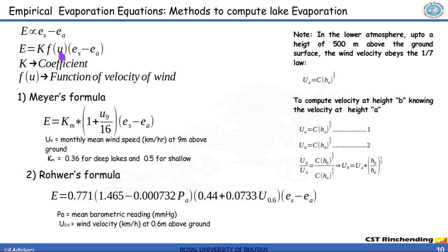As you notice in Mayer's formula, Km is the coefficient. The next term is the factor that considers the wind velocity and the last term is the difference between saturated vapor pressure and the actual vapor pressure. Whereas the Rohwer's formula also considers the pressure term.